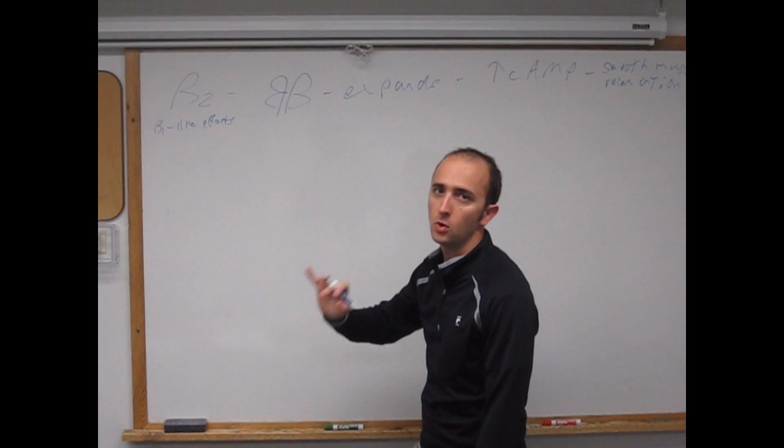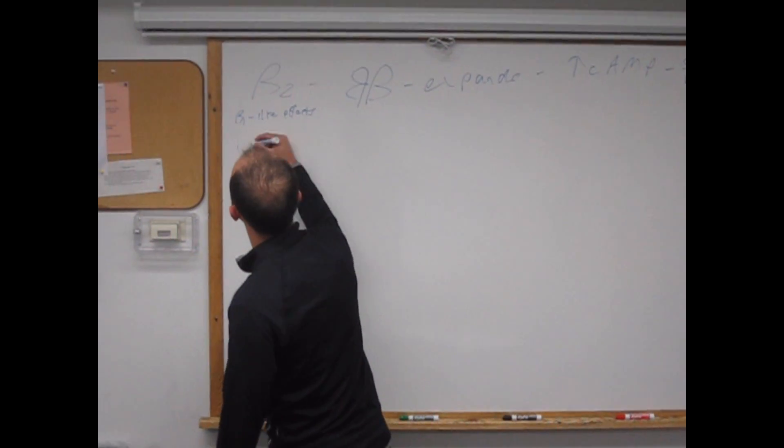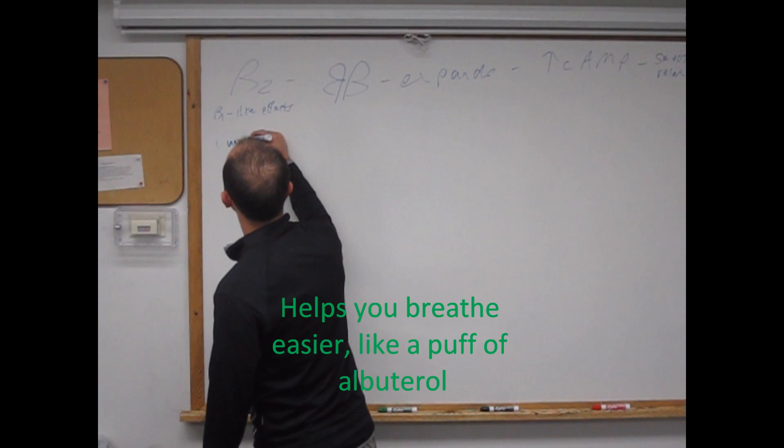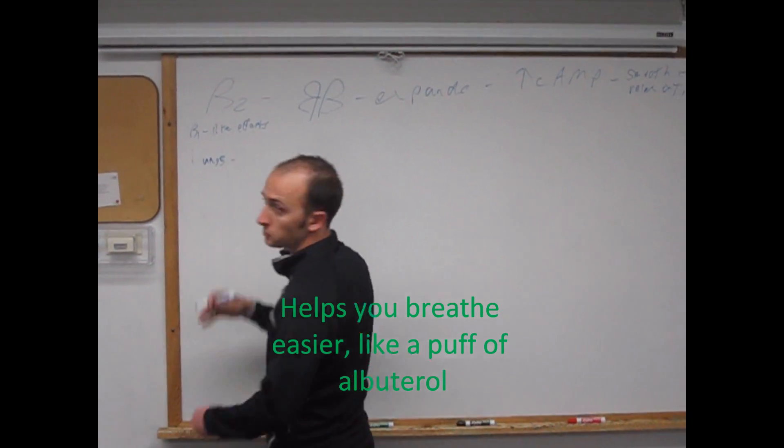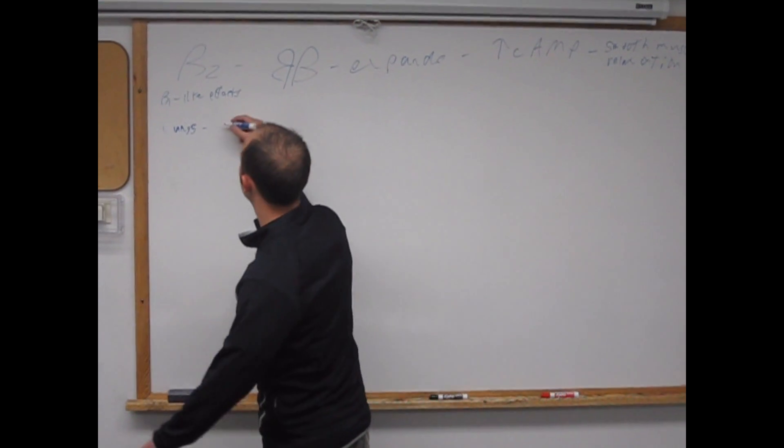The big things that beta 2 is going to do: one, works on the lungs, that's number one probably. That's why you take your albuterol inhaler. What's it going to do? It's going to expand your bronchi.